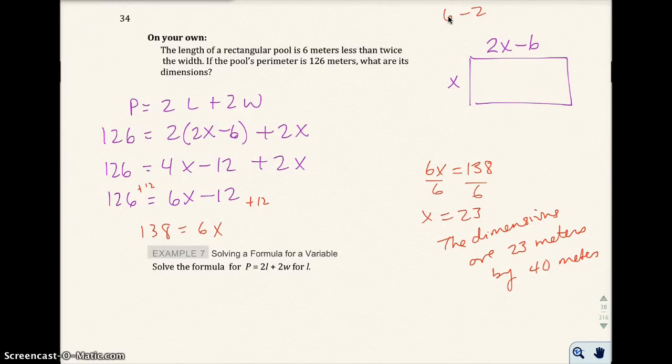Okay, so 6 less than twice the width. So here's twice the width, right here, and 6 less than that would be minus 6. Once you get that, you can go and plug it into the perimeter formula, and we know the perimeter is 126, which I put right there. I solve for x, and I get x to equal 23. The dimensions are 23 meters by 40 meters. I got 40 when I put 23 right into here and figure out what the length that would be.